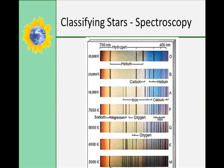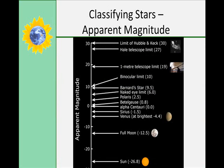Astronomers can use line spectra to identify the chemical elements in a star. Each element produces characteristic patterns of spectral lines. We can also classify a star's brightness as it actually appears in the sky, and that's called the apparent magnitude. Modern astronomers with the use of telescopes have expanded on the original classification systems to also include planets, the moon, and the sun.